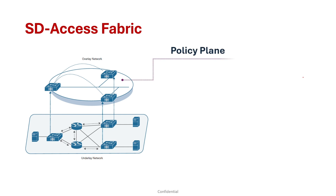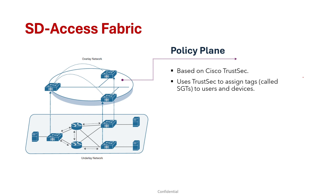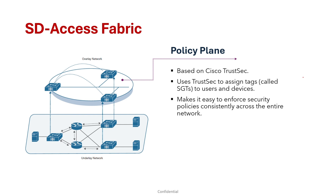There is also a policy plane in the SD Access fabric. The fabric policy plane is based on Cisco TrustSec. It uses TrustSec to assign tags called SGTs (Scalable Group Tags) to users and devices. Policies are applied through the SD Access fabric based on the SGT tag assigned to users, instead of network addresses like MAC, IPv4, and IPv6 which were used in ACLs. This makes it easier to enforce security policies consistently across the entire network.